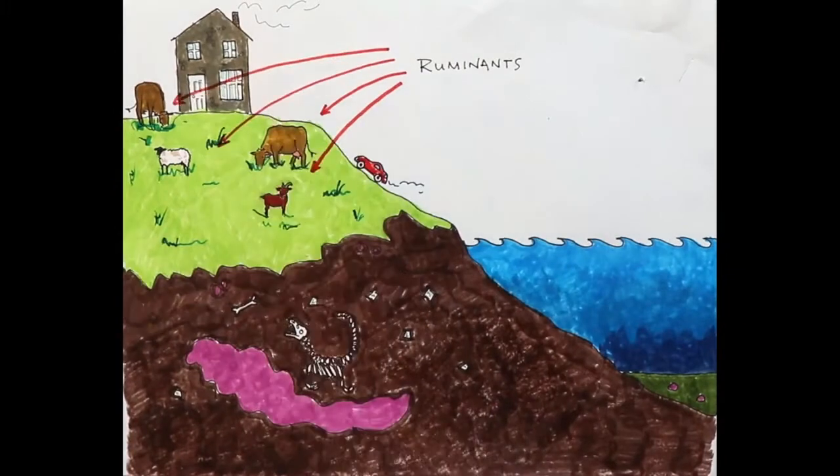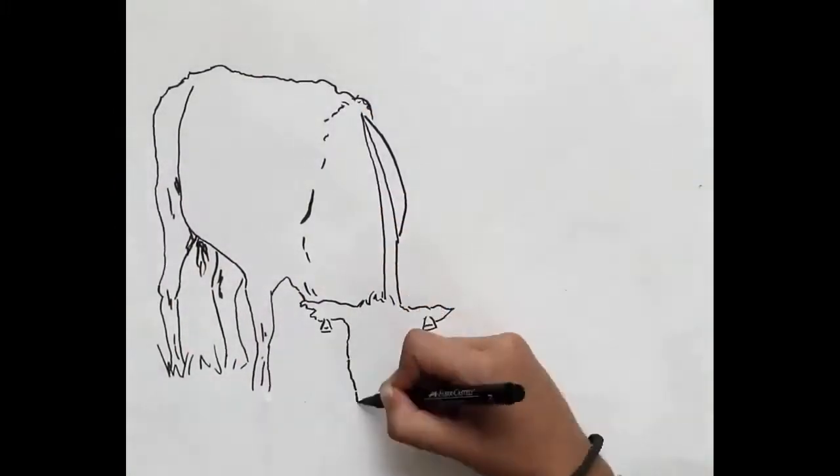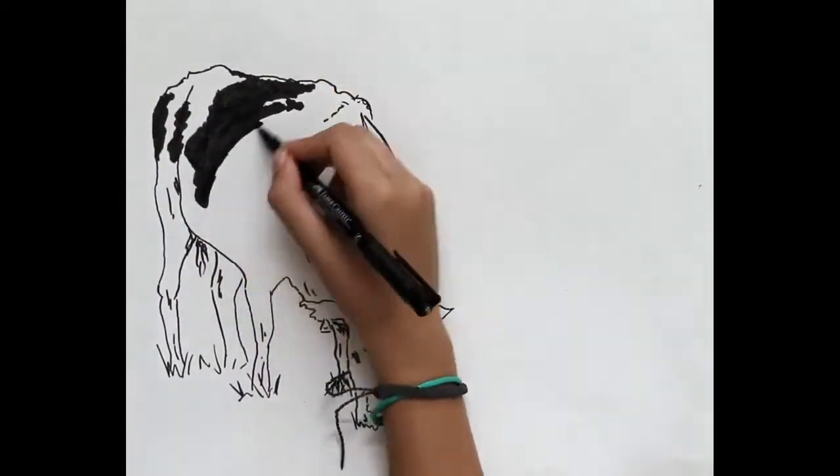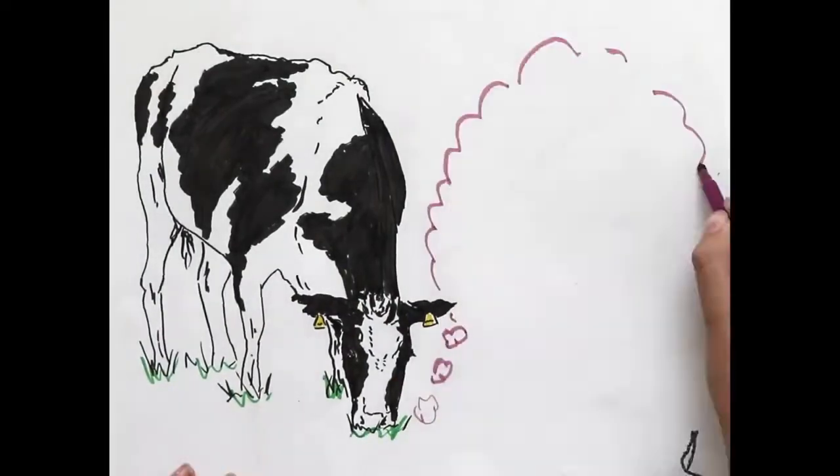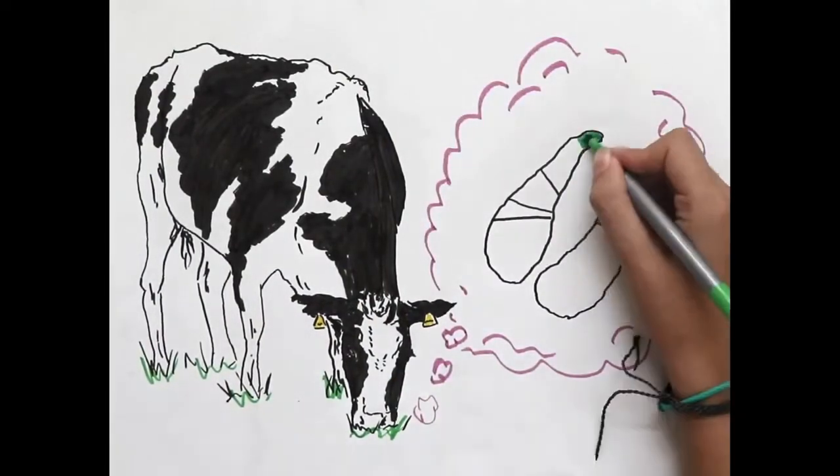Even though farmers are taking important strides towards reducing their environmental impact, cows still account for more than half of all livestock greenhouse gas emissions, 44% of which come from ruminant burps.